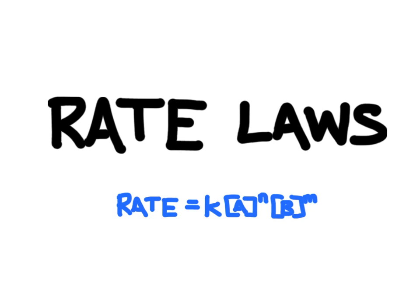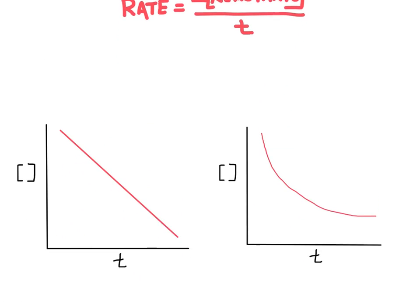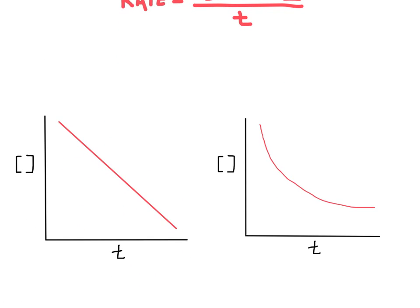In this video we're going to learn about rate laws. Chemical kinetics is a field of chemistry that deals with the rate of a chemical reaction — that is, how quickly a chemical reaction takes to complete. To measure the rate we can measure the change in concentration of the reactants with respect to time. Some reactions are quite simple and the rate is always going to be the same no matter what the concentration becomes. Other reactions are more complicated and the rate changes depending on the concentration of the reactants.